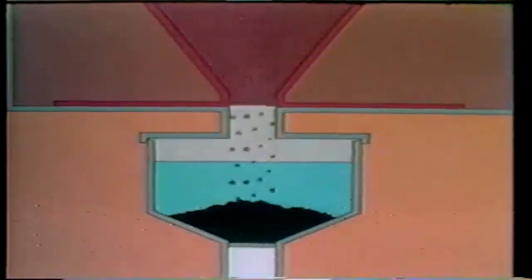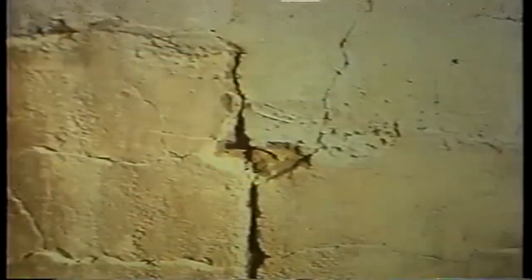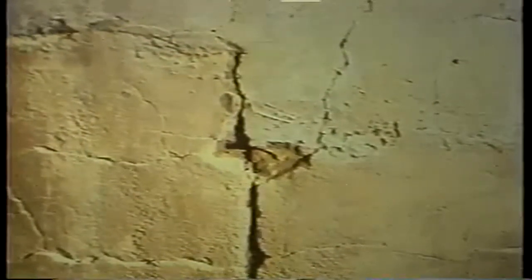The bottom ash hopper can have refractory problems caused by the bottom ash that collects there. The ash is very hot when it enters the hopper and is normally cooled quickly by water. However, this water must be drained periodically to remove accumulated ash. While the hopper is empty, hot ash can heat the refractory inside. The sudden temperature change that occurs when the hopper is refilled with water can lead to spalling and cracking of the refractory.